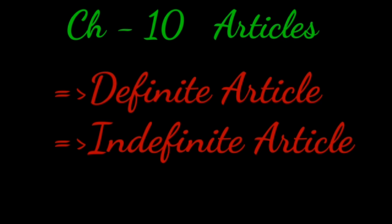Chapter 10: Articles. Articles are of two types: one is definite article and another one is indefinite article.